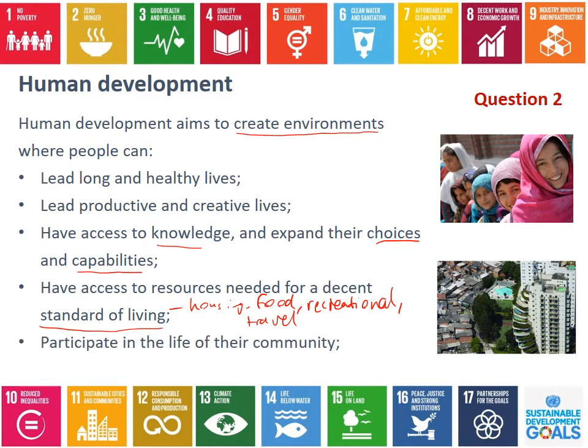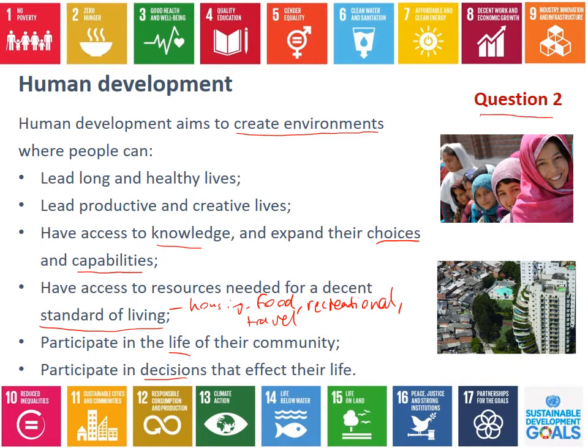Human development also allows people to participate in the life of their community and in the decisions that affect their life. For example, if a person has a really high level of education, lives a long and healthy life, and lives in a good house, but they're not allowed to make decisions as part of their life, we wouldn't say they have good human development. You need to have all of these things.